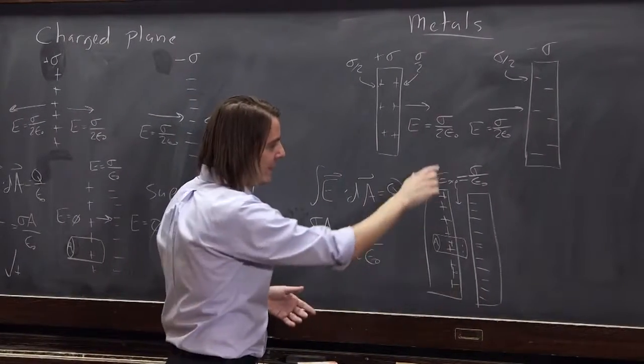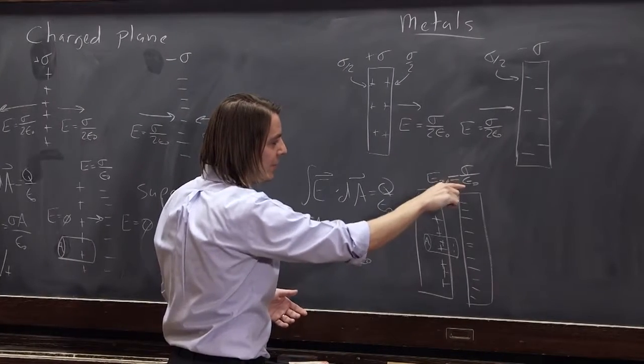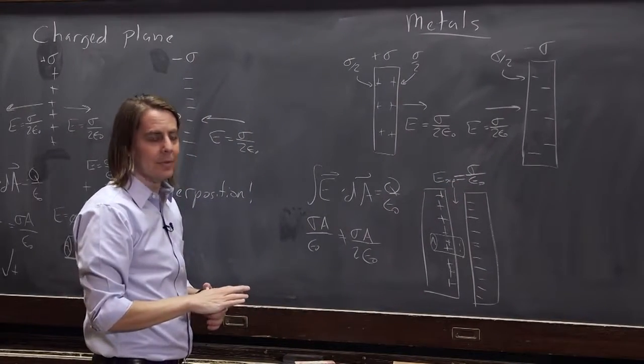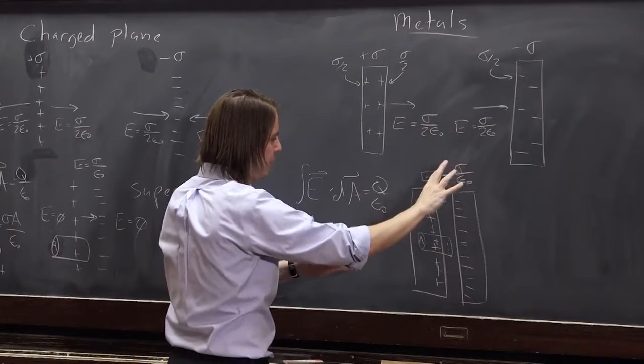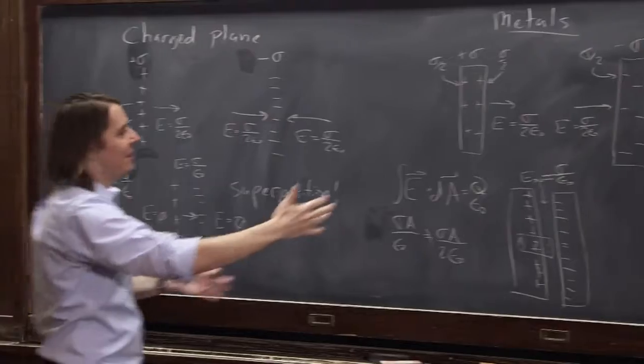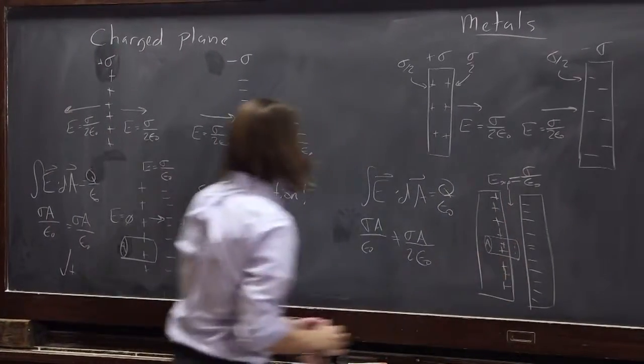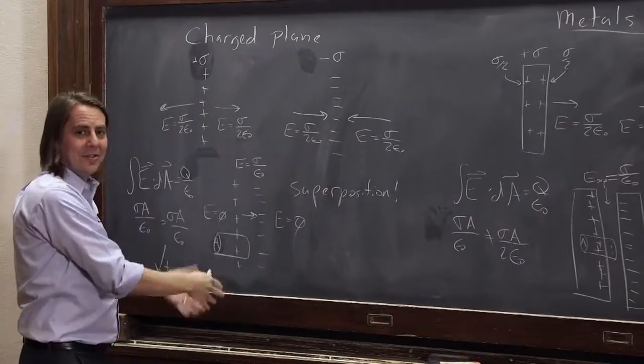Let's see if that will make this true. It's still E in the gap is sigma over epsilon naught. You don't recalculate things. It's still true because essentially it's the same situation. Now all the charge has run to the surface. It looks exactly like this. There's no difference.